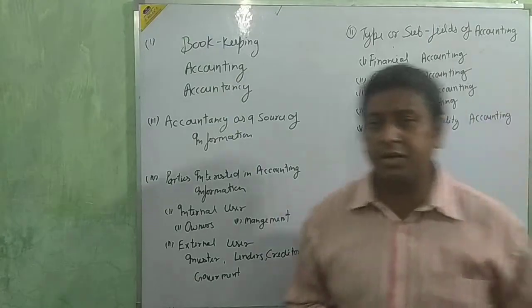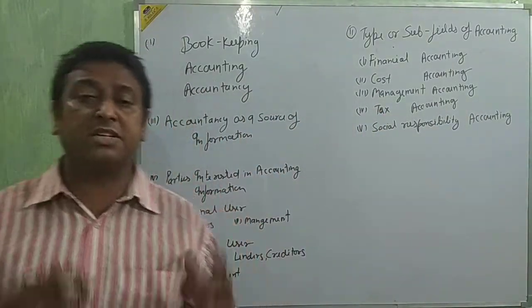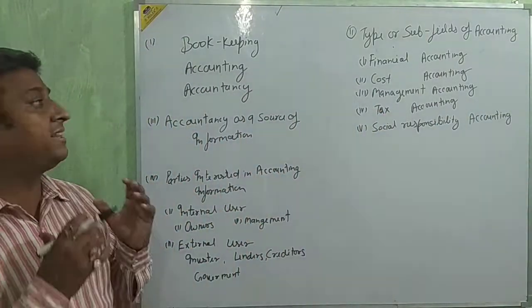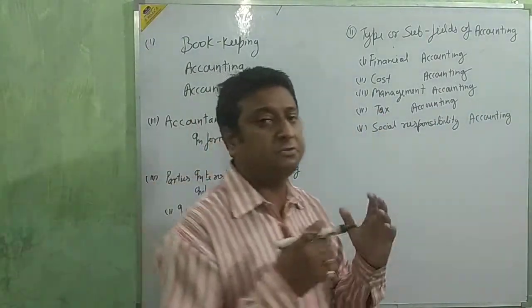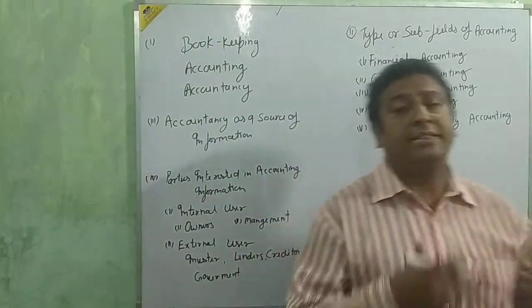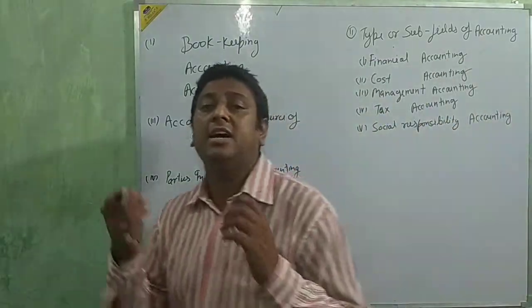The exact definition of accounting: accounting is the process in which we take all transactions, write them in different books, then classify them — summarize, classify, and interpret the data.